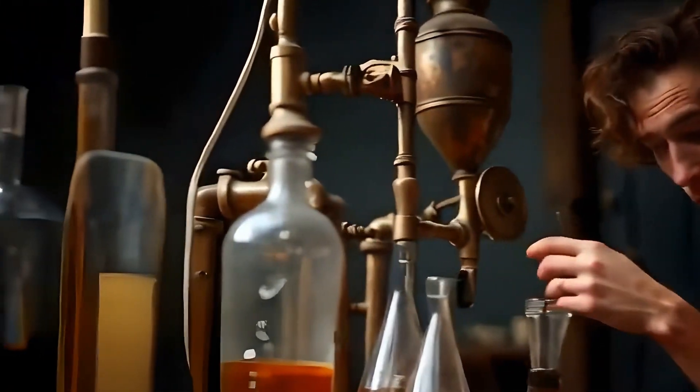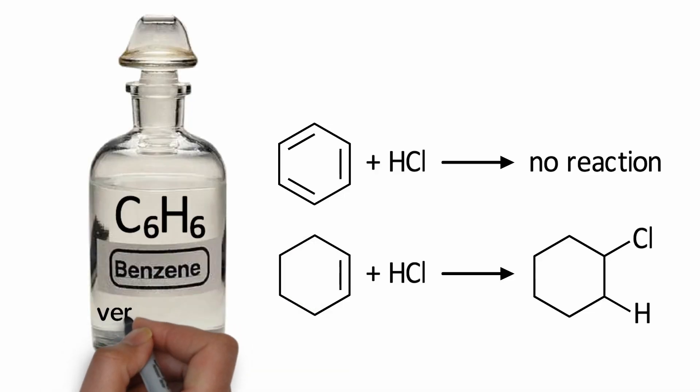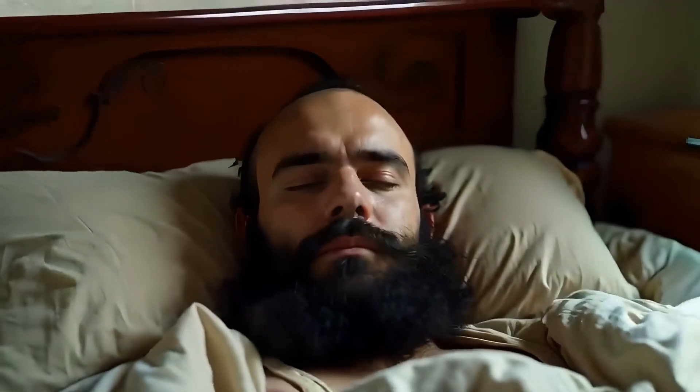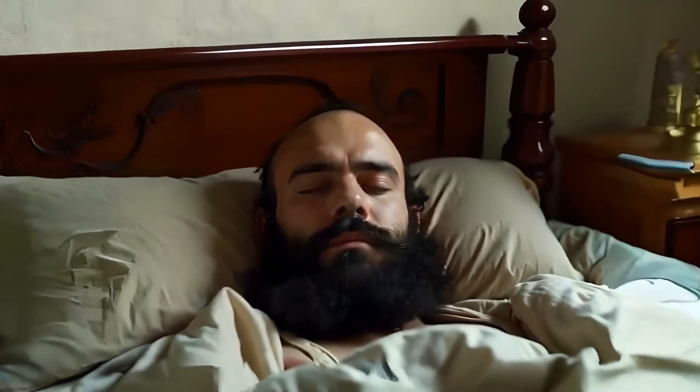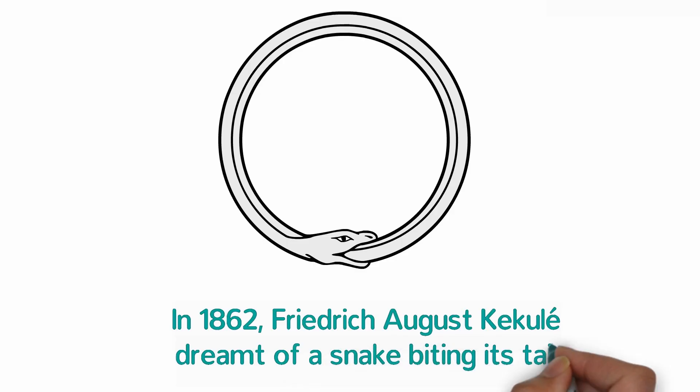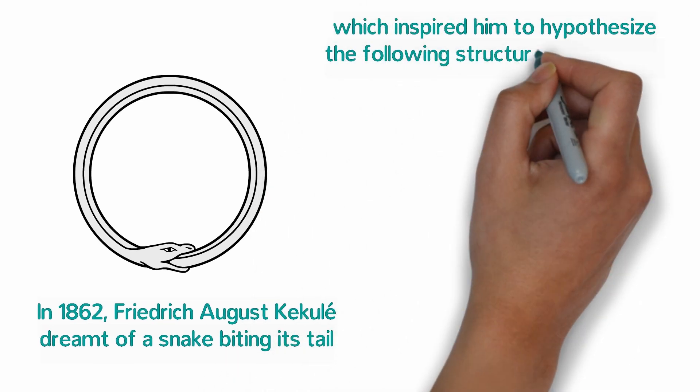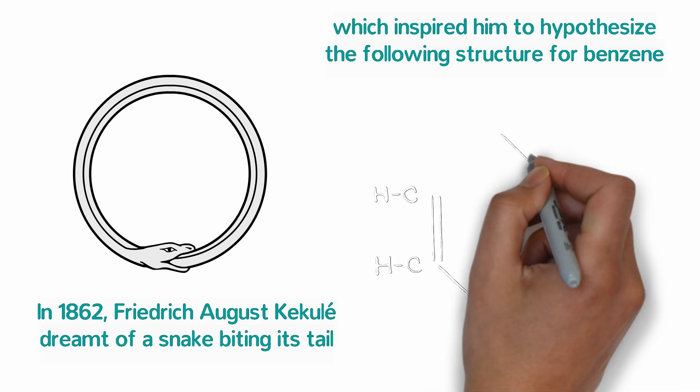Benzene has the formula C6H6, but it is more stable than other unsaturated hydrocarbons. While reflecting upon the inert nature of benzene and the known isomers of substituted benzene, Friedrich Auguste Kekule had a dream of a snake biting its own tail, which inspired him to hypothesize the following structure for benzene in 1862.